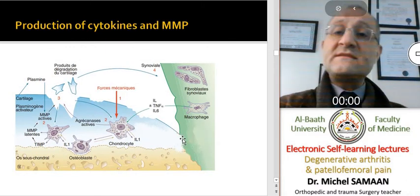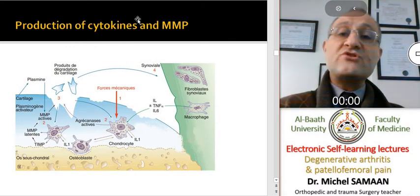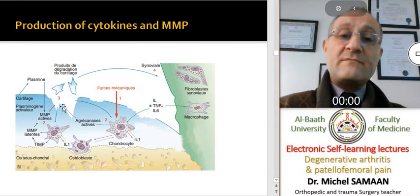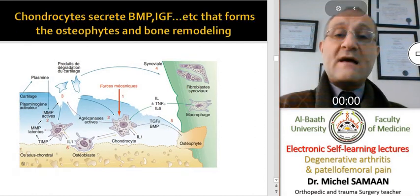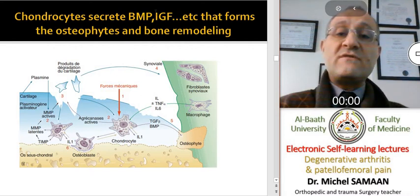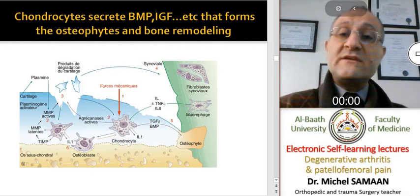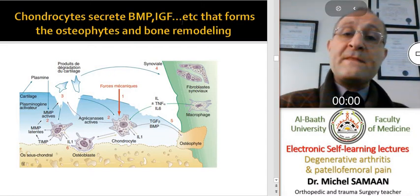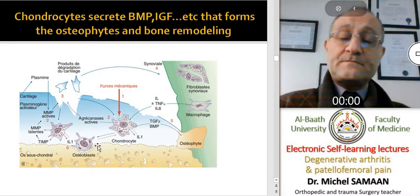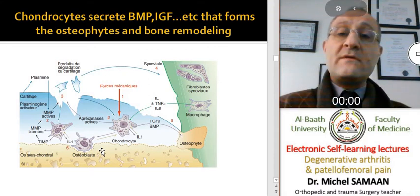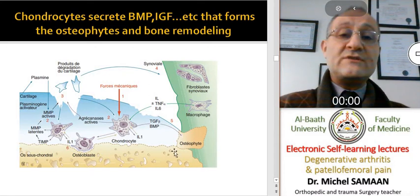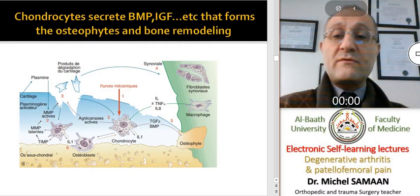As a result of this synovitis, we can see the production of cytokines and other metalloprotease. The effect on chondrocytes causes secretion of bone morphogenic protein and insulin-like growth factors, which activate osteoblasts in the subchondral bone, causing bone remodeling and osteophyte formation at the margins of the joints.